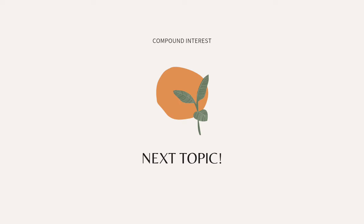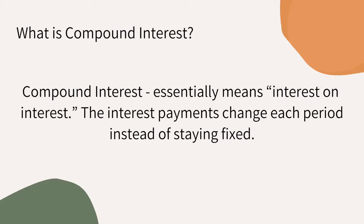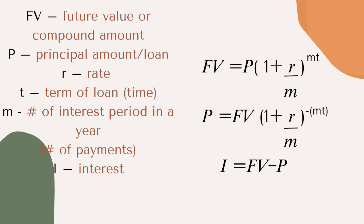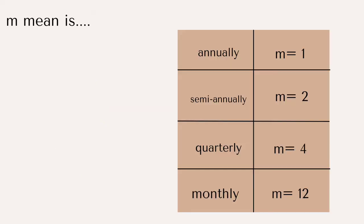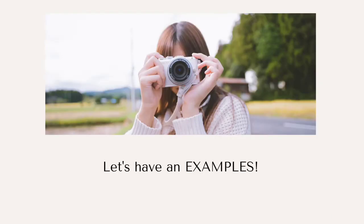Let's head to compound interest. What is compound interest? Compound interest essentially means interest on interest. The interest payment will change each period instead of staying fixed. These are the terms and formula for compound interest. M means: annually is 1, semi-annually is 2, quarterly is 4, and monthly is 12.